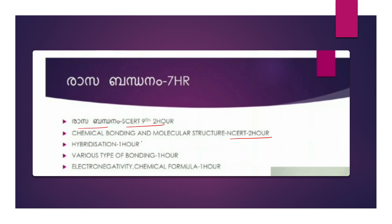The NCRT chapter on chemical bonding and molecular structure covers hybridization — SP, SP2, SP3 hybridization — and various different types of bonds including ionic bonds, covalent bonds, electronegativity, and chemical formulas.